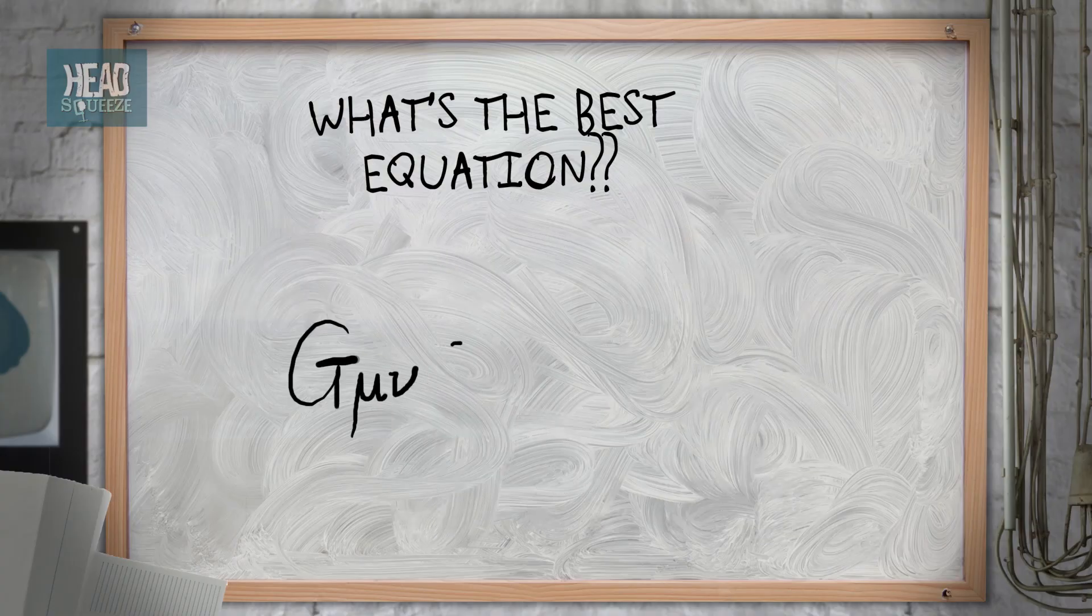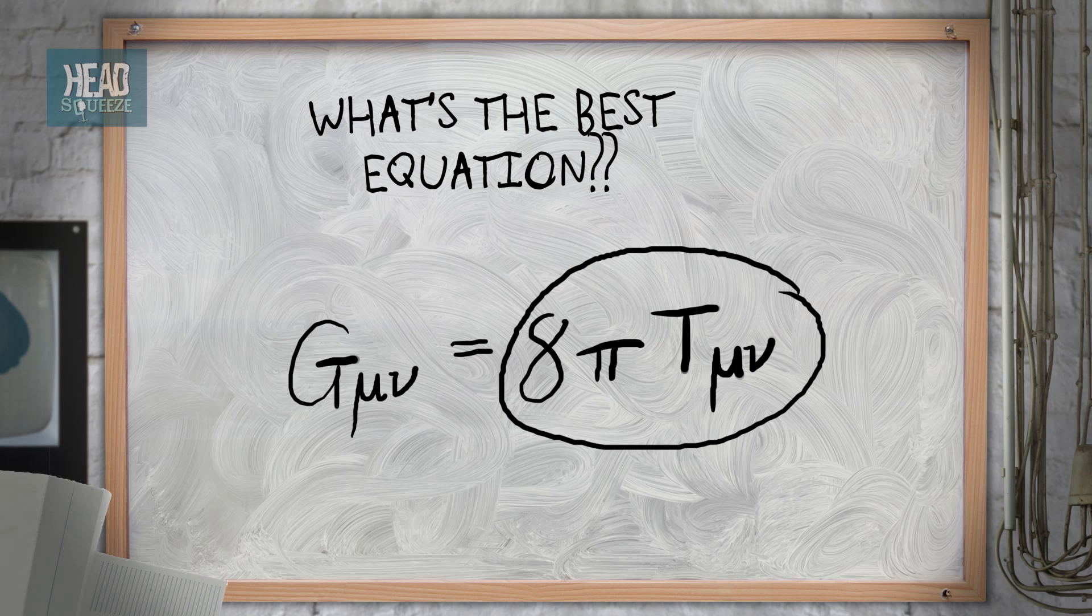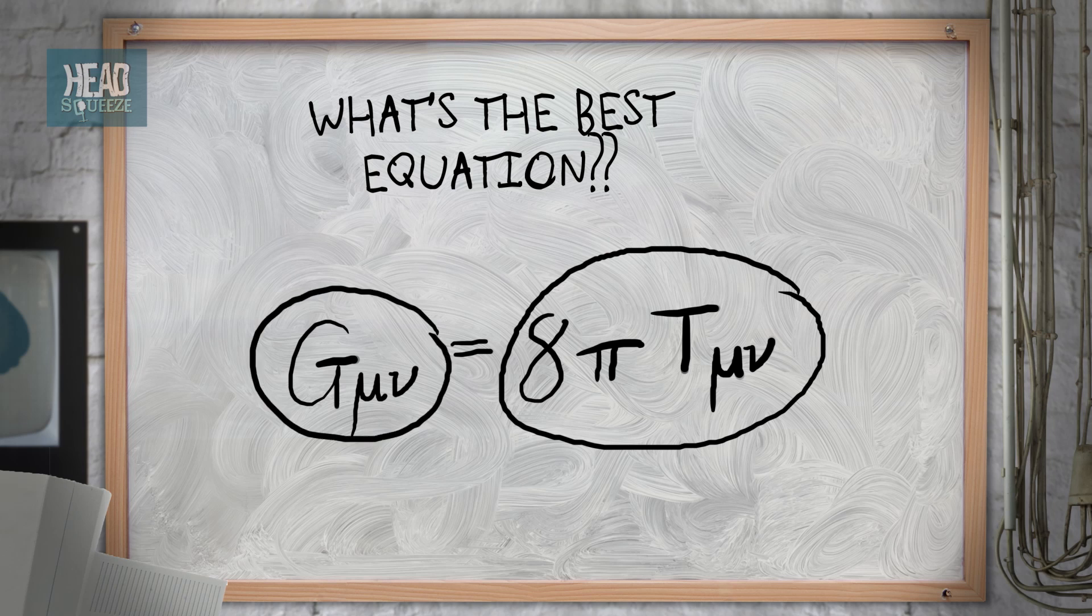Yeah, and yet the term on the right-hand side summarizes everything about the matter in the universe and the way it's moving around at any one moment, and the term on the left-hand side tells you about the curvature of the universe and therefore what's going to happen next to all that same stuff. Ingenious. Compact. Magnificent.